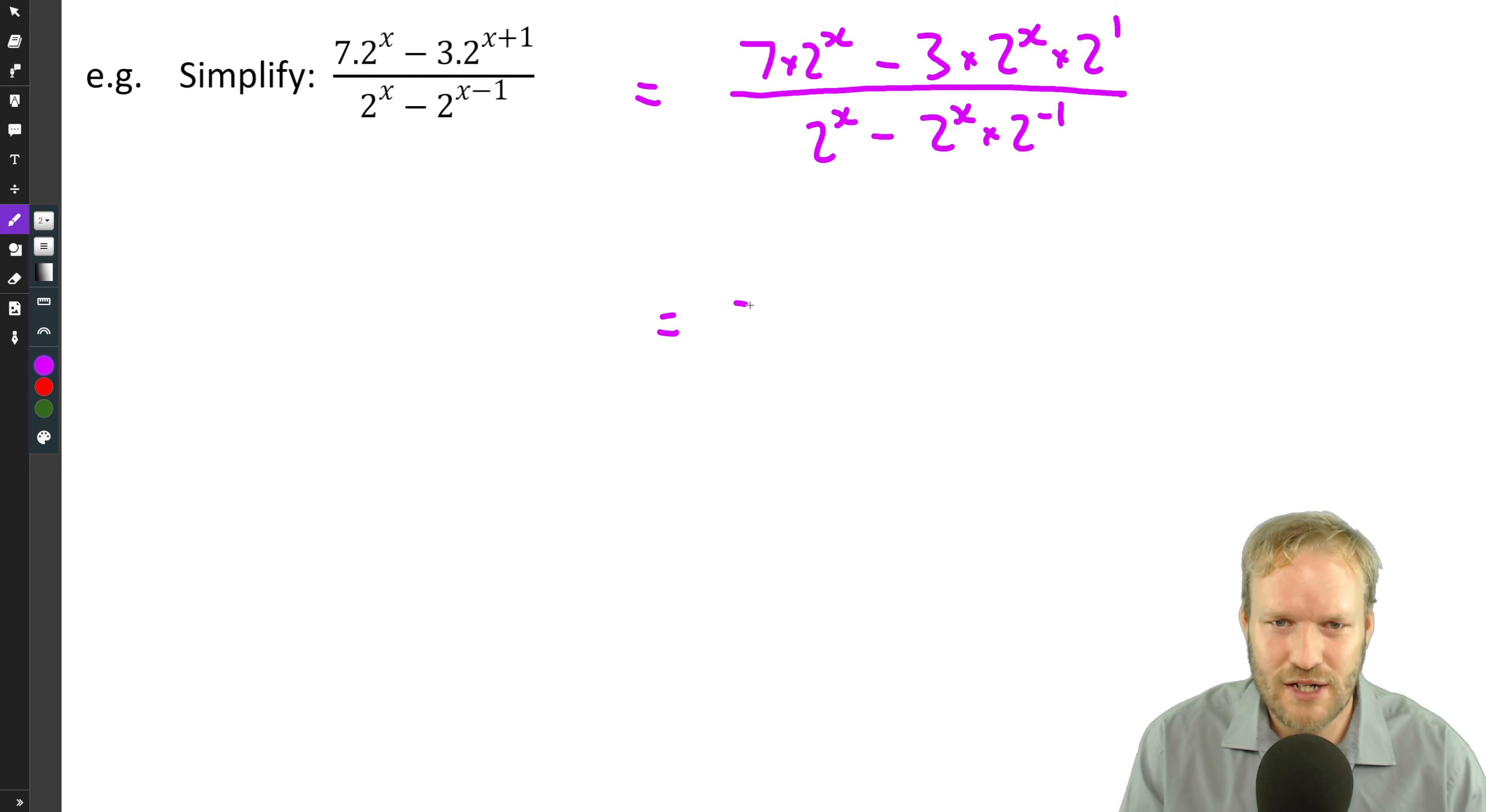Denominator two to the x minus two to the x times two to the minus one. Now separately on the numerator and denominator, we're going to look for a common factor. Well, it's probably going to be the same in the numerator and the denominator, to be honest, in the way that the question is designed.